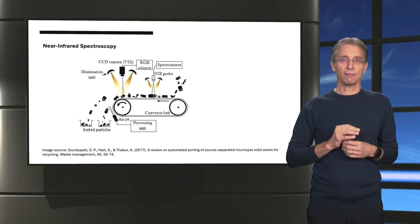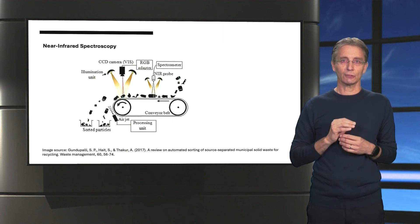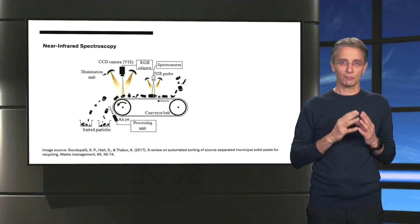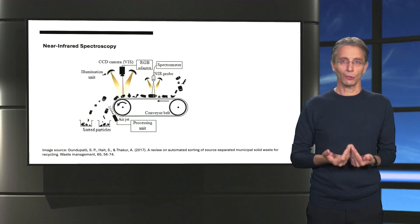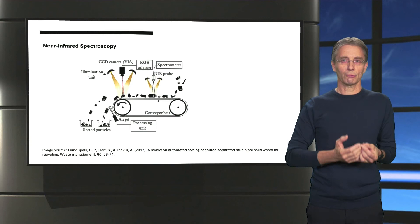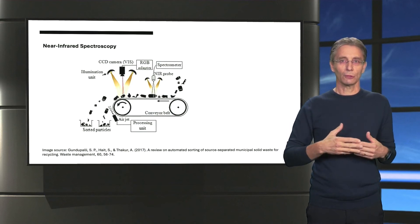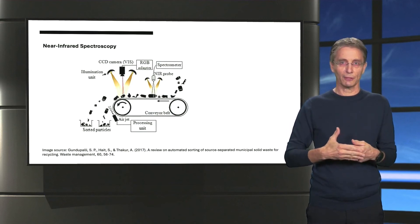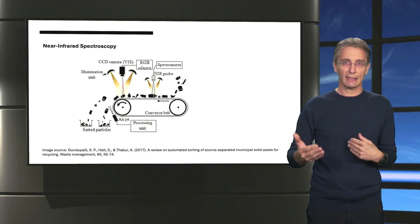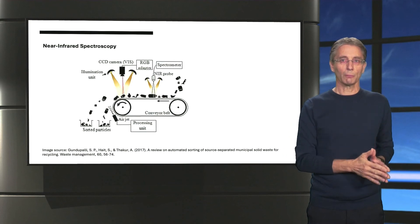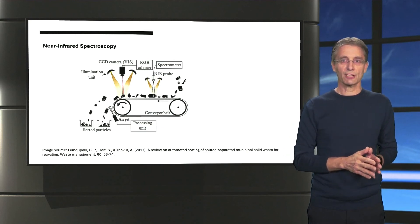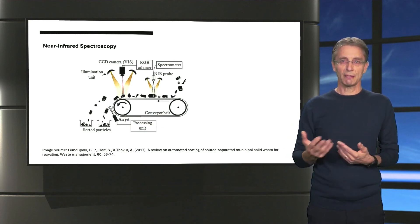A limitation of near-infrared spectroscopy is that it doesn't work well with dark colors, especially black, since these absorb nearly all light, also in the near-infrared. It can also run into problems when labels or coatings cover the surface of a material, which will cause a false reading by the sensor. In addition to near-infrared, there are other optical methods that use X-ray or laser technology to distinguish between polymers.